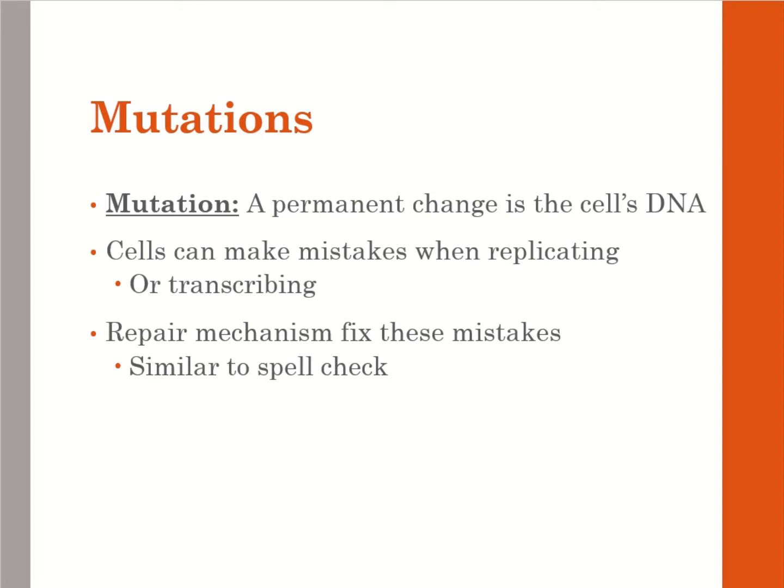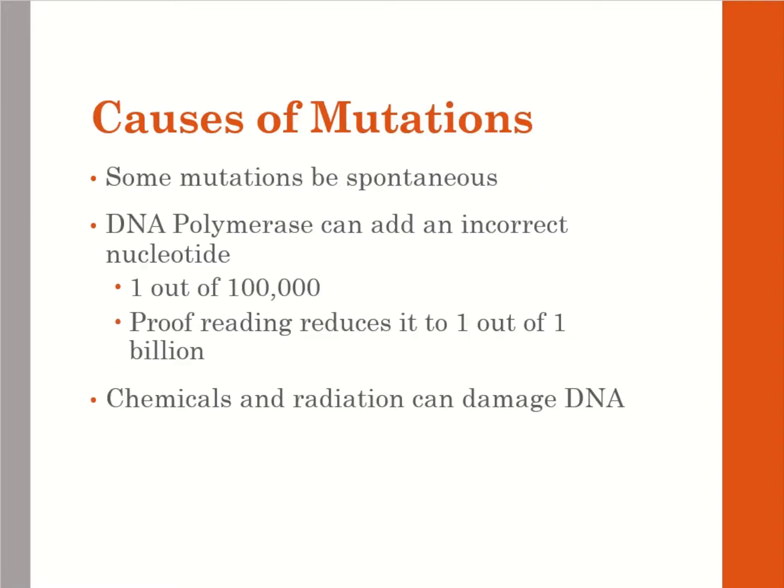Cells can make mistakes when replicating or transcribing, but there are repair mechanisms to fix the mistakes — kind of like spellcheck. DNA polymerase can add an incorrect nucleotide spontaneously, which happens about one out of a hundred thousand times, but proofreading reduces it to one out of one billion. So we've got things in place that can fix those mutations and drop that rate way down.